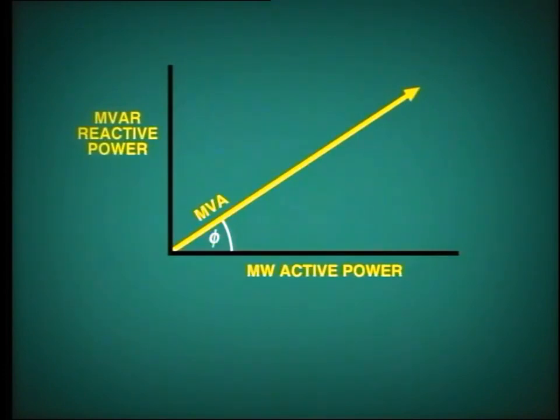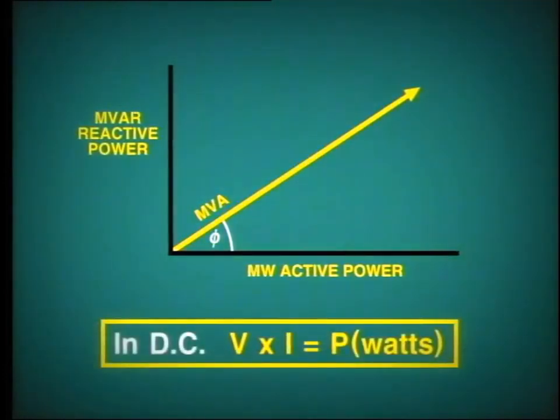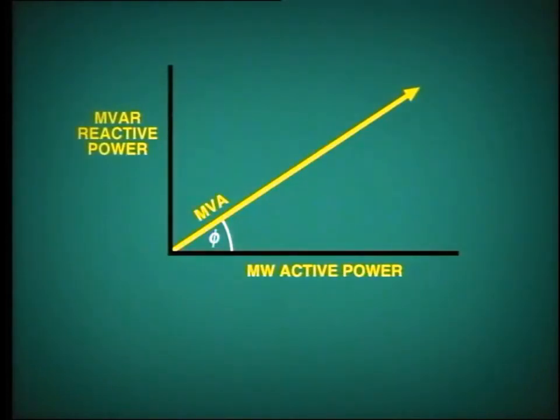You will remember that in a DC circuit, if we multiply volts times amps, we get power in watts. However, in an AC circuit, volts times amps (VA) gives us apparent power as it is a combination of VARs and watts.